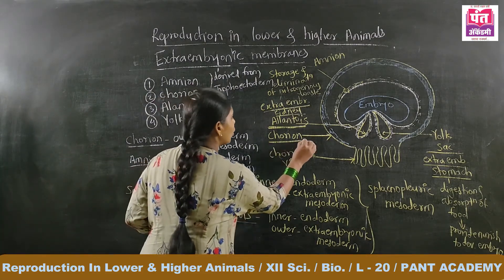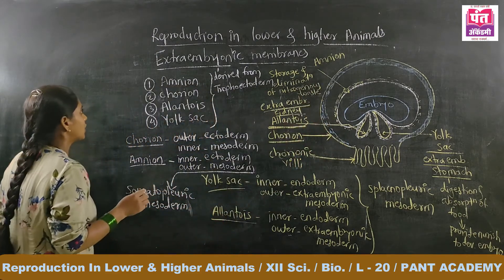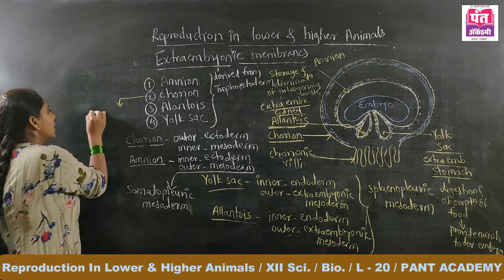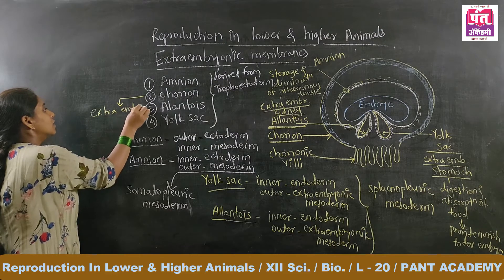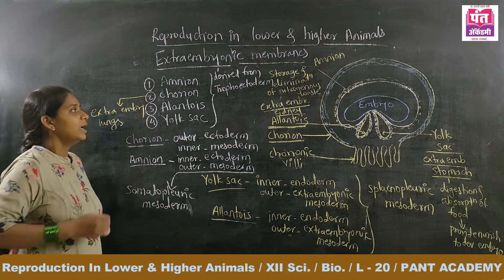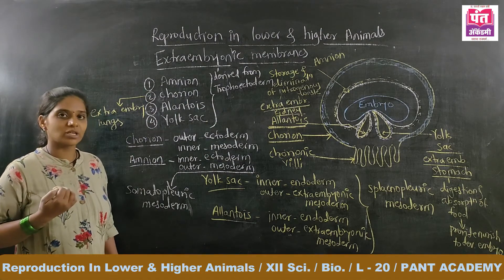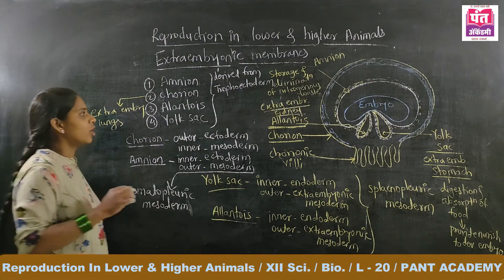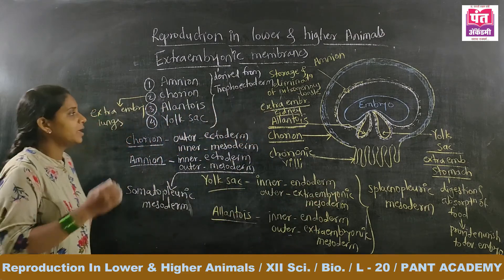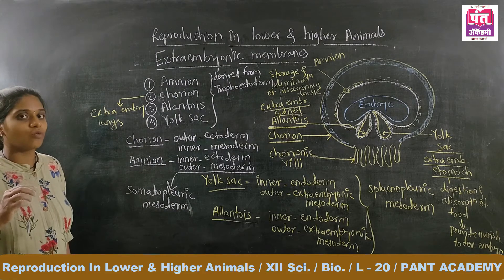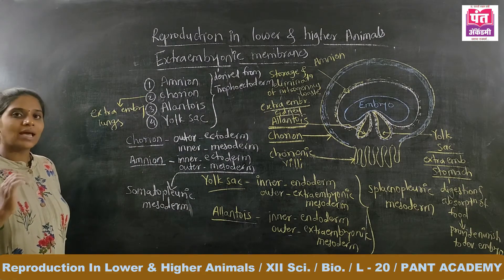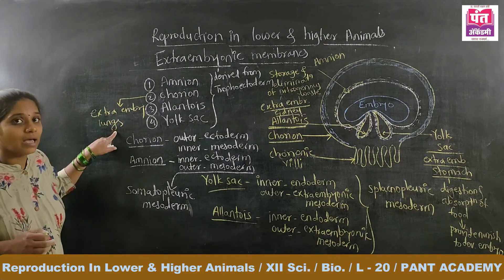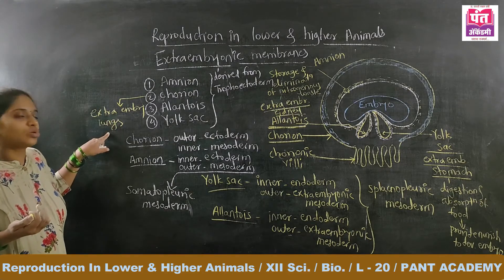The chorion acts as extra embryonic lungs — it is responsible for the exchange of gases. It also protects the embryo. From the chorion, chorionic villi are formed, and the chorion is also responsible for the formation of the placenta. The amnion provides aqueous medium to the embryo and also acts as a shock absorber.